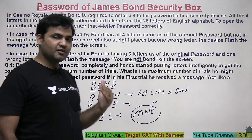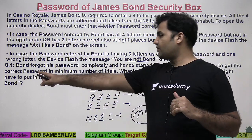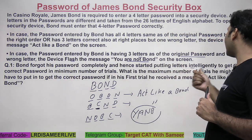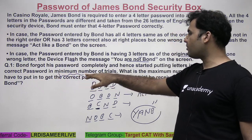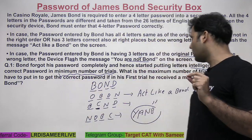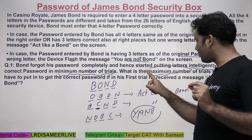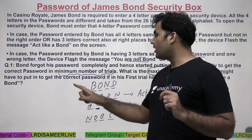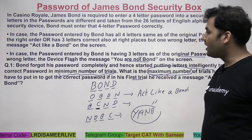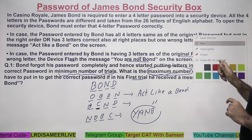The concept of this whole set is based on permutation and combination. Question one says: Bond forgot his password completely and hence started putting letters intelligently to get the correct password in the minimum number of trials. Keep in mind: minimum number of trials. What is the maximum number of trials he might have to put in to get the correct password, if in his first trial he received the message 'act like a Bond'?